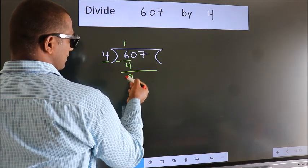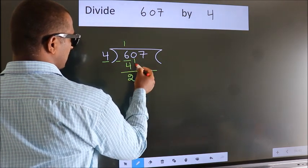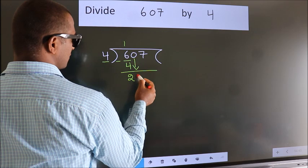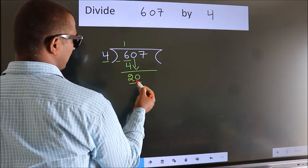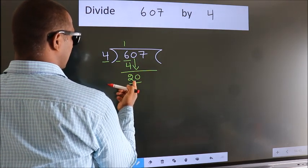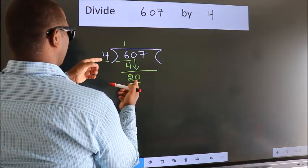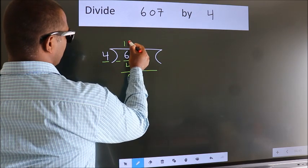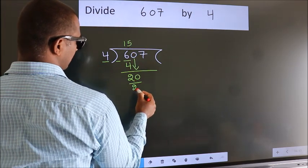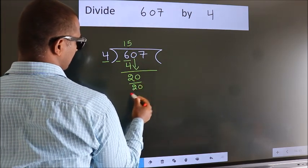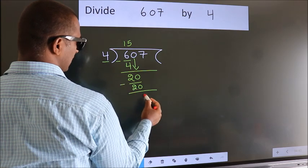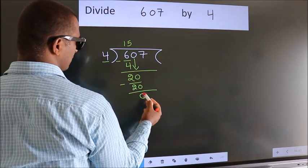After this, bring down the beside number. So 0 comes down, giving us 20. In the 4 times table, 4 fives are 20. Now we subtract and we get 0.